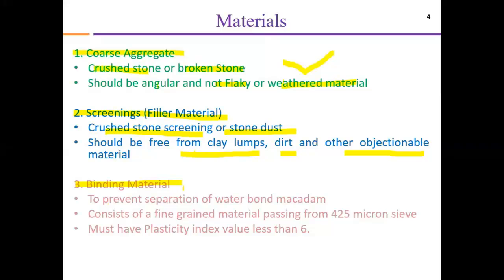Binding material is used to further prevent the separation of the water-bound macadam. It is a fine-grain material which will pass through a 425 micron sieve and should have a plasticity index less than 6. These are the physical parameters of the binding material. After applying screening and water to the compacted aggregates, further binding and prevention of separation is achieved with the help of the binding material.